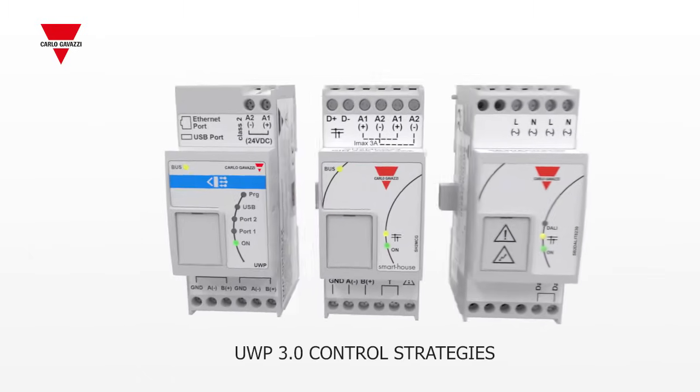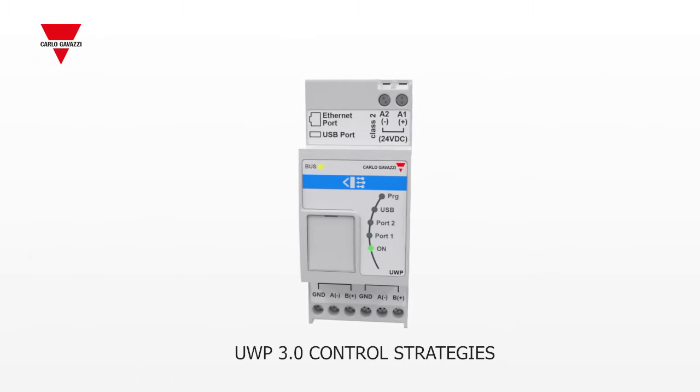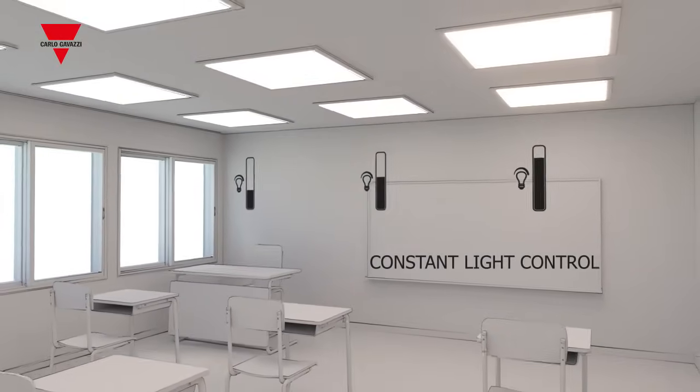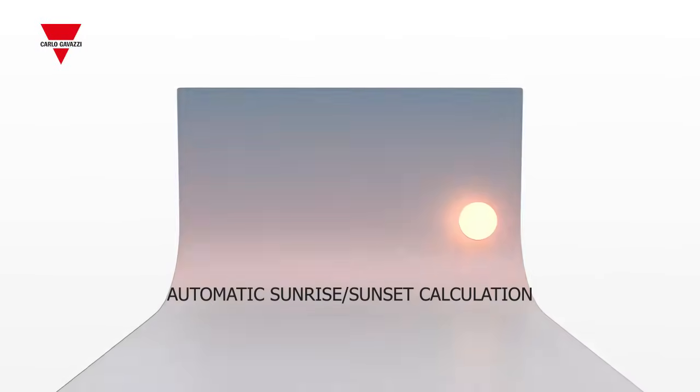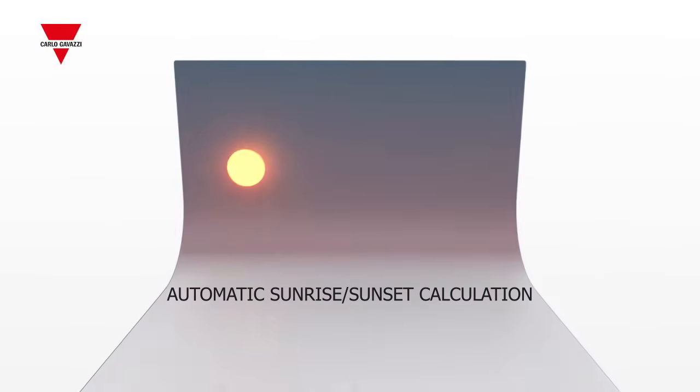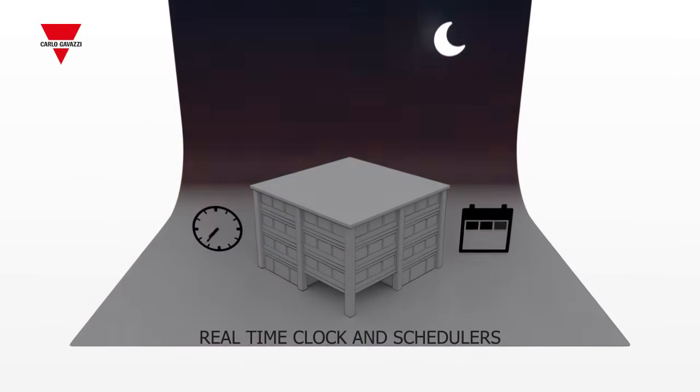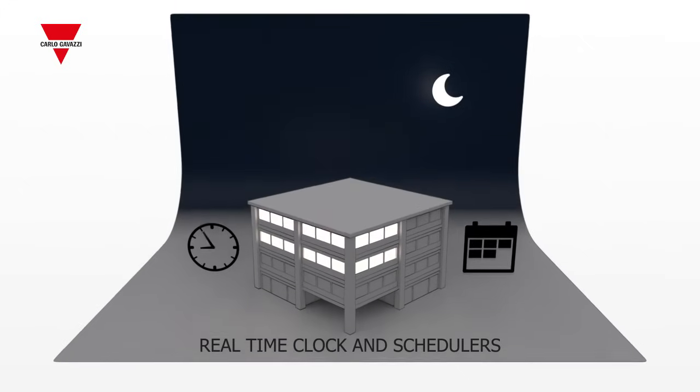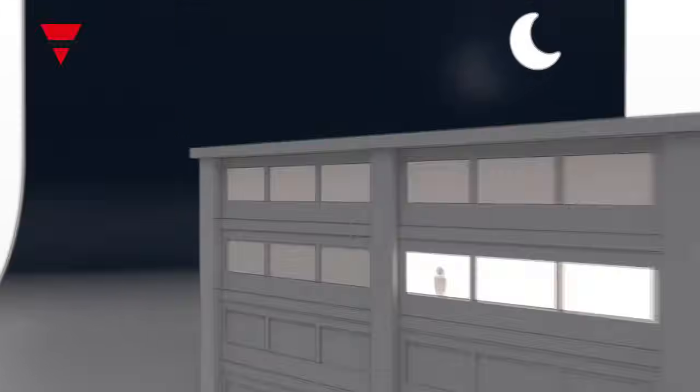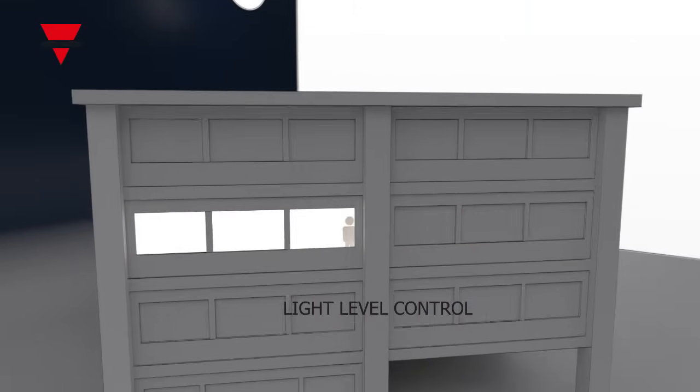The main control strategies provided by the UWP 3.0 controller are constant light control, automatic sunrise and sunset calculation, real-time clock and schedulers to switch on-off, dim, or change scenario, light level control according to people presence and timers, and zone control.